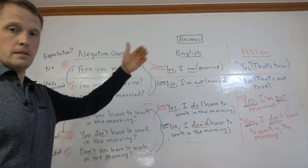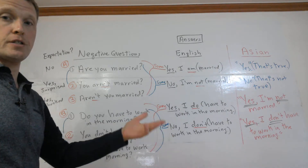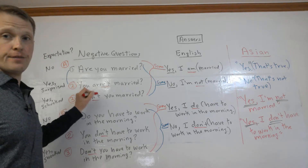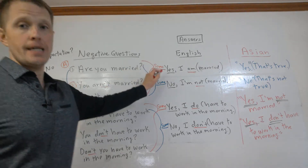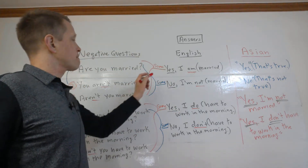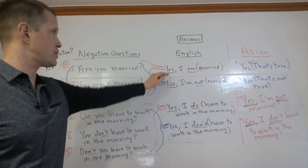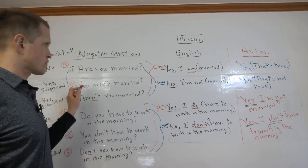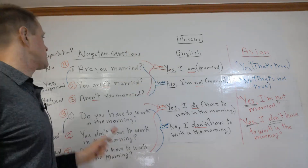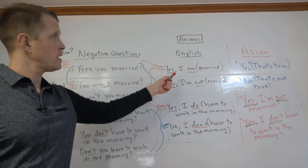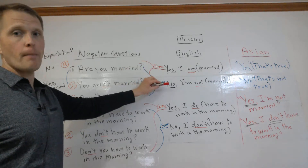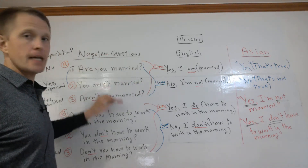Now let's look at the answers. Unlike in some Asian languages such as Korean, whatever answer you give for the positive question, you give the same answer for the negative forms. 'Are you married?' — yes, I am married. 'You aren't married?' — yes, I am married. 'Aren't you married?' — yes. It's the same: yes, yes, yes. Or: no, I'm not married; no, I'm not married; no, I'm not married — either yes, yes, yes or no, no, no.